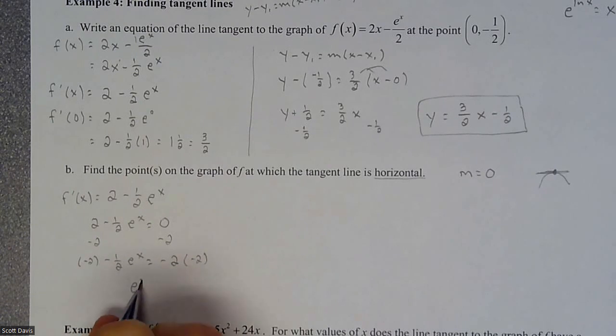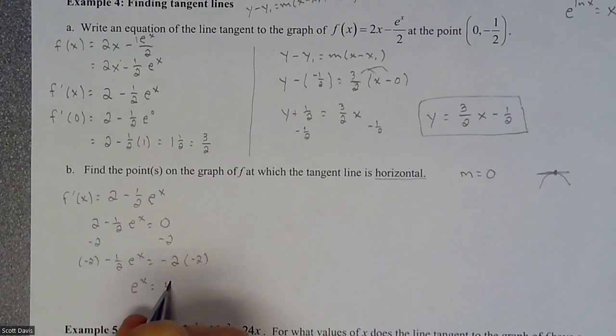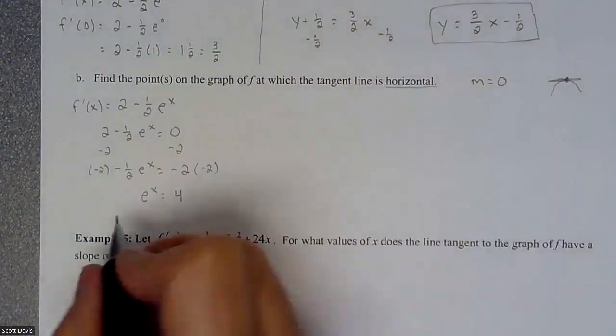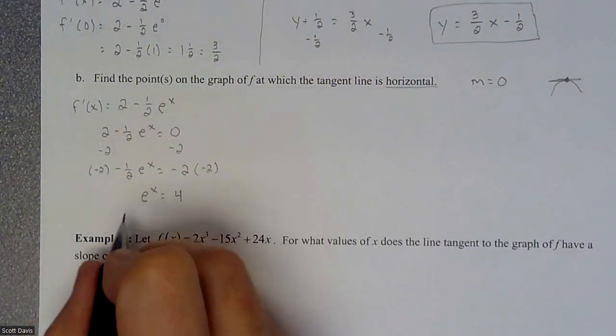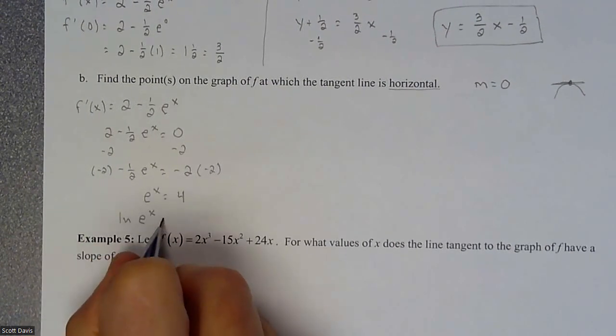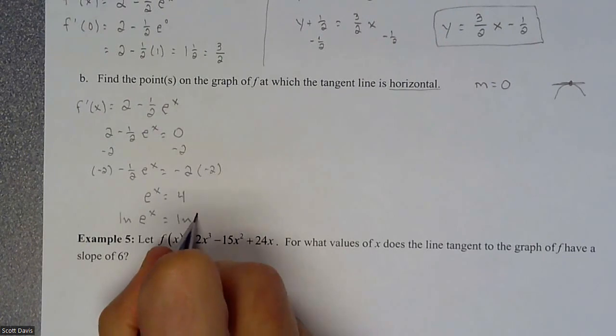So we're looking at e to the x equals 4. And then in order to solve an exponential, we're going to log both sides. So we're going to natural log both sides. So natural log e to the x equals the natural log of 4.